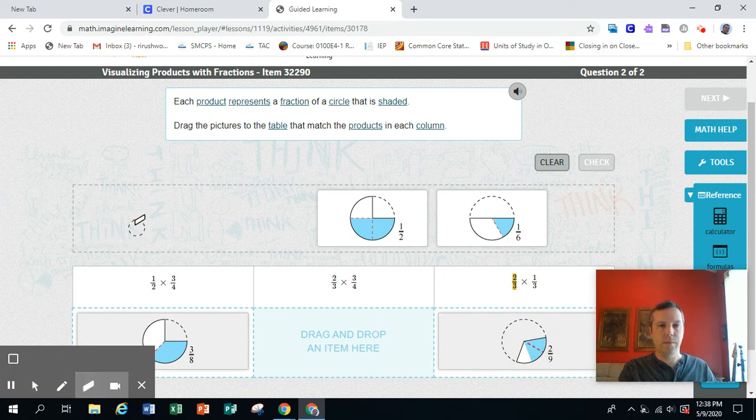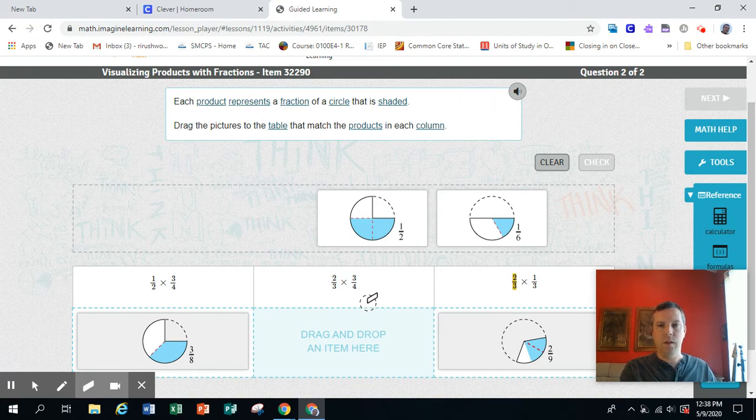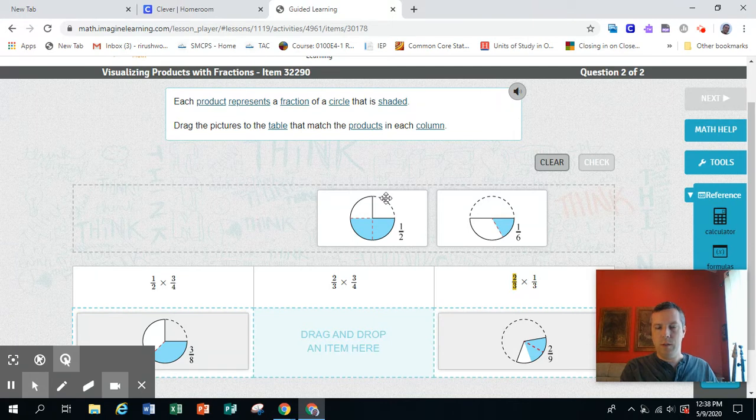Let me erase this line. All right. So I've got 1 left. 2 thirds of 3 fourths. So following the same process as I did before, this is going to be 3 fourths.